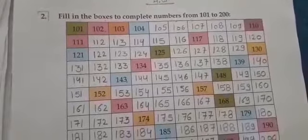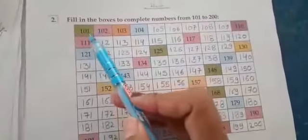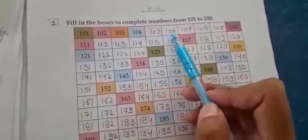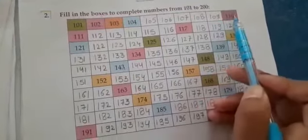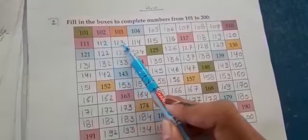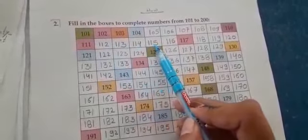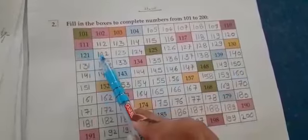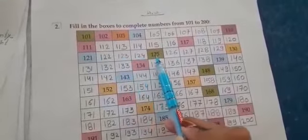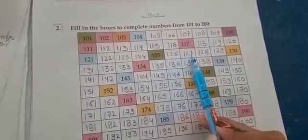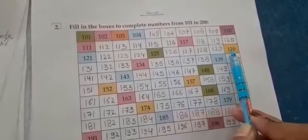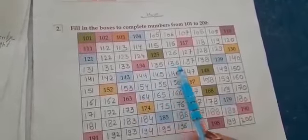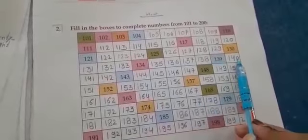Next, fill in the boxes to complete numbers from 101 to 200. Starting: 101, 102, 103, 104, 105, 106, 107, 108, 109, 110, 111, 112, 113, 114, 115, 116, 117, 118, 119, 120, continuing through 121, 122, 123, 124, 125, 126, 127, 128, 129, 130, and up to 140.